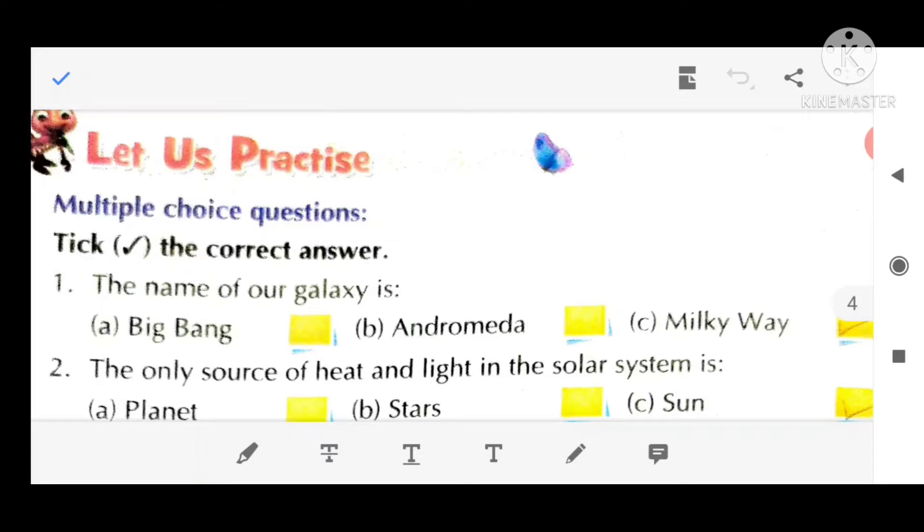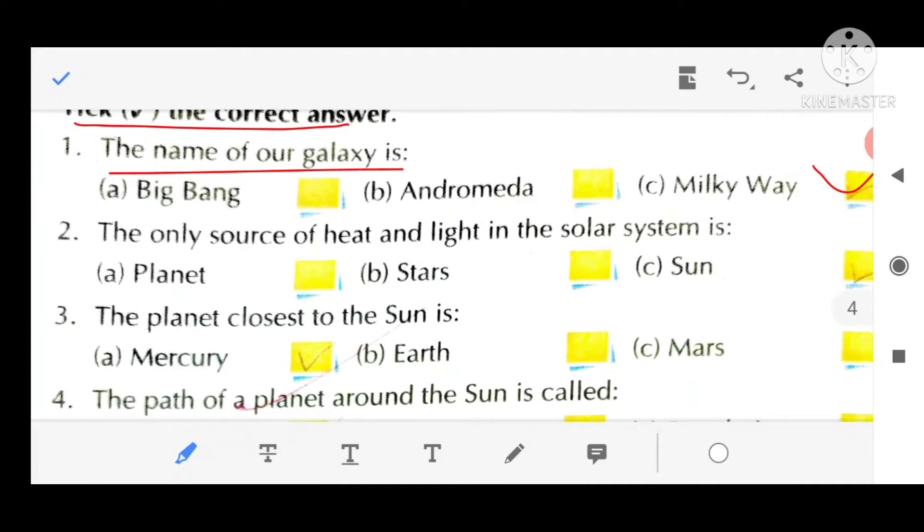Multiple choice question. The name of our galaxy is Milky Way. Second, the only source of heat and light in the solar system is sun.